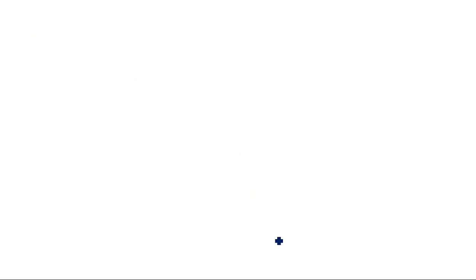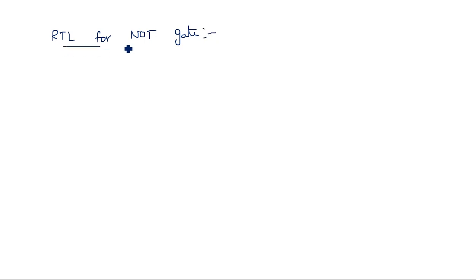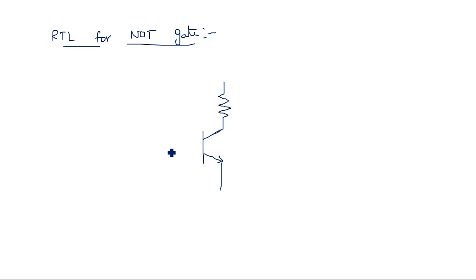Now let us see the RTL realization of this NOT gate. RTL stands for Resistor Transistor Logic, meaning the circuit must be made up of resistors and transistors. You have a transistor with two resistors — one at the input side and another one at the output side.